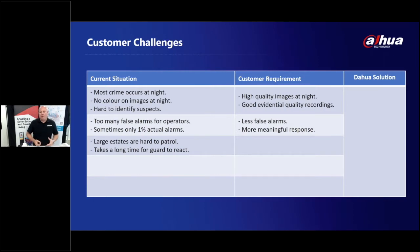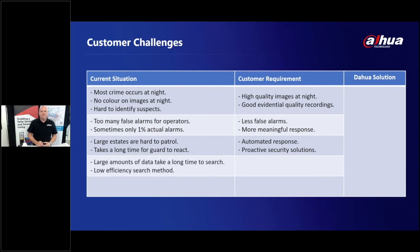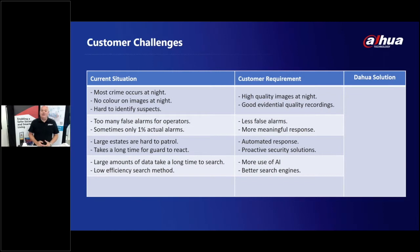Customers also tell us that larger estates are hard to patrol. A large campus makes it difficult for security guards to reach an incident quickly. Technology can help by providing automated responses using active deterrent and two-way audio. And when searching recordings, AI filtering allows operators to find incidents faster rather than sifting through large amounts of HD footage.